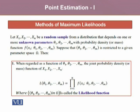In Step 1, when we regard the function of theta 1 through theta m, the joint probability density function of x1 through xn is given by a likelihood function denoted L of theta 1, theta 2, up to theta m. This is a joint probability function, hence it is given as the product from i equals 1 to n of f of xi, theta 1, theta 2, up to theta m.